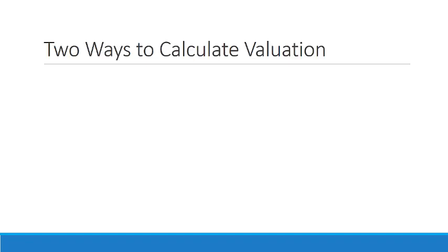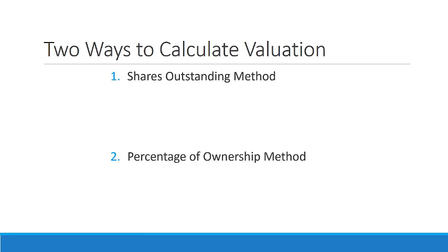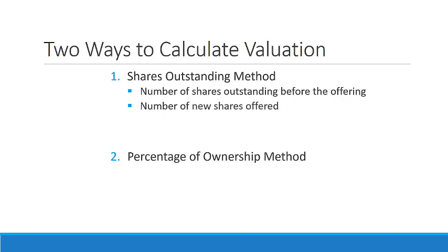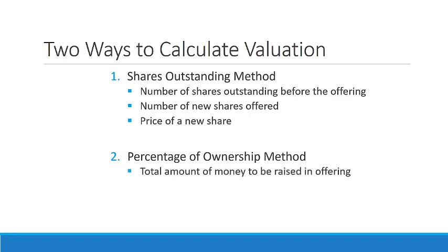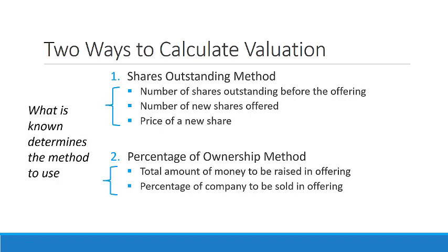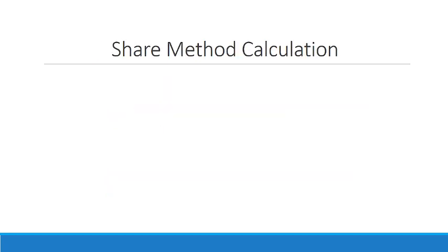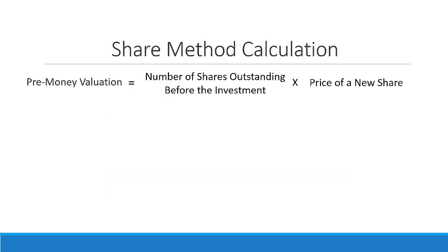There are two ways to calculate valuation: the shares outstanding method, and the percentage of ownership method. The shares outstanding method requires the number of shares outstanding before the offering, the number of new shares offered, and the price of a new share. The percentage of ownership method requires the total amount of money to be raised in the offering and the percentage of the company to be sold. What is known determines the method to use. Here's the formula: pre-money valuation equals the number of shares outstanding before the investment times the price of a new share.